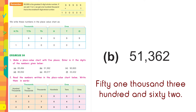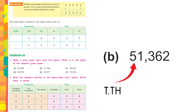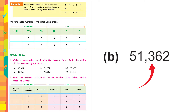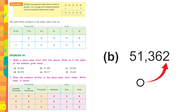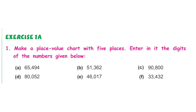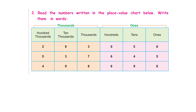For part b, 51,362: 5 comes in the ten-thousands column, 1 in the thousands column, 3 under hundreds, 6 under tens, and 2 under ones. This is how you attempt the rest of the questions. Now coming to question number 2: read the numbers written in the place value chart below and write them in words.